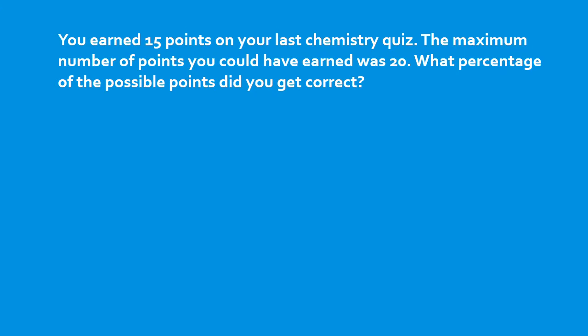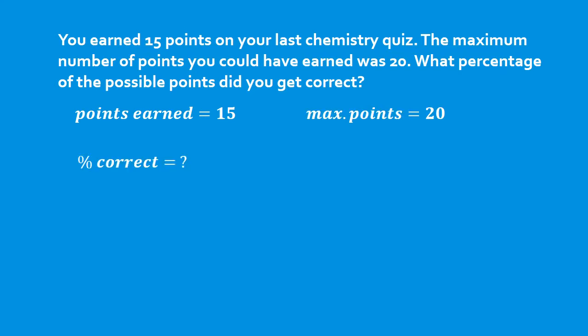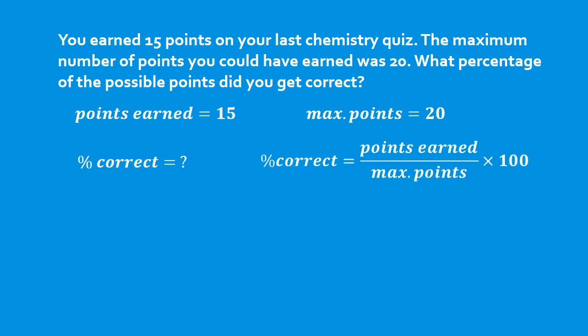Let's look at some examples. You earned 15 points on your last chemistry quiz. The maximum number of points you could have earned was 20. What percentage of the possible points did you get correct? Points earned was 15, maximum points possible was 20. Percent correct equals points earned divided by maximum points — the fraction of the whole — times a hundred. 15 divided by 20 times a hundred gives us 75%. You should already know this because that's how I grade my quizzes.